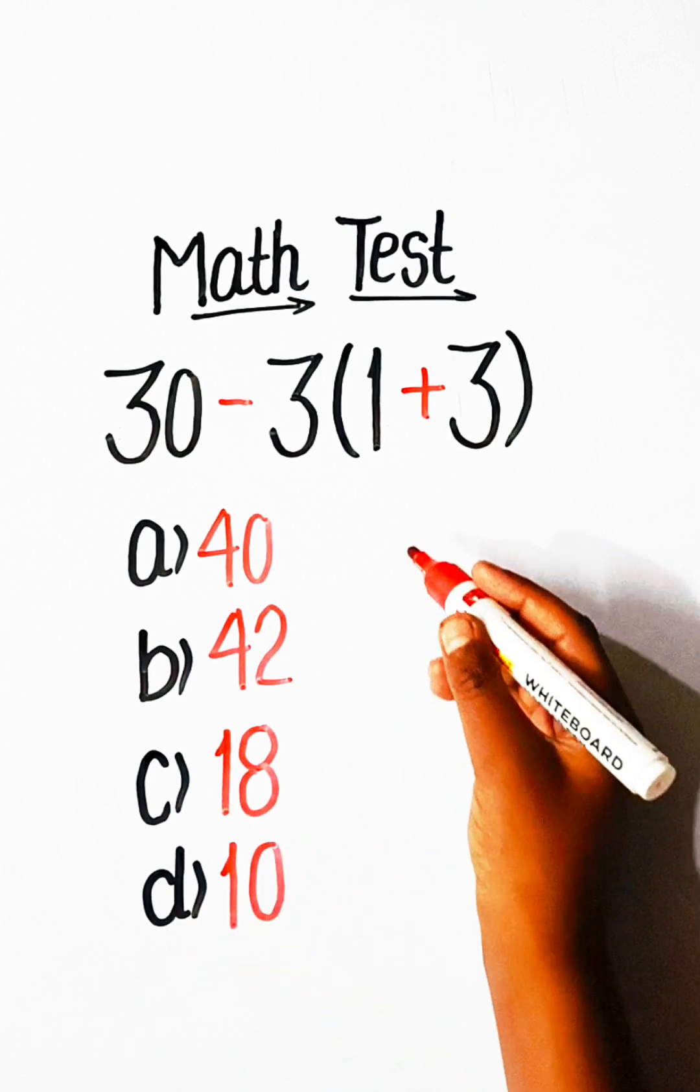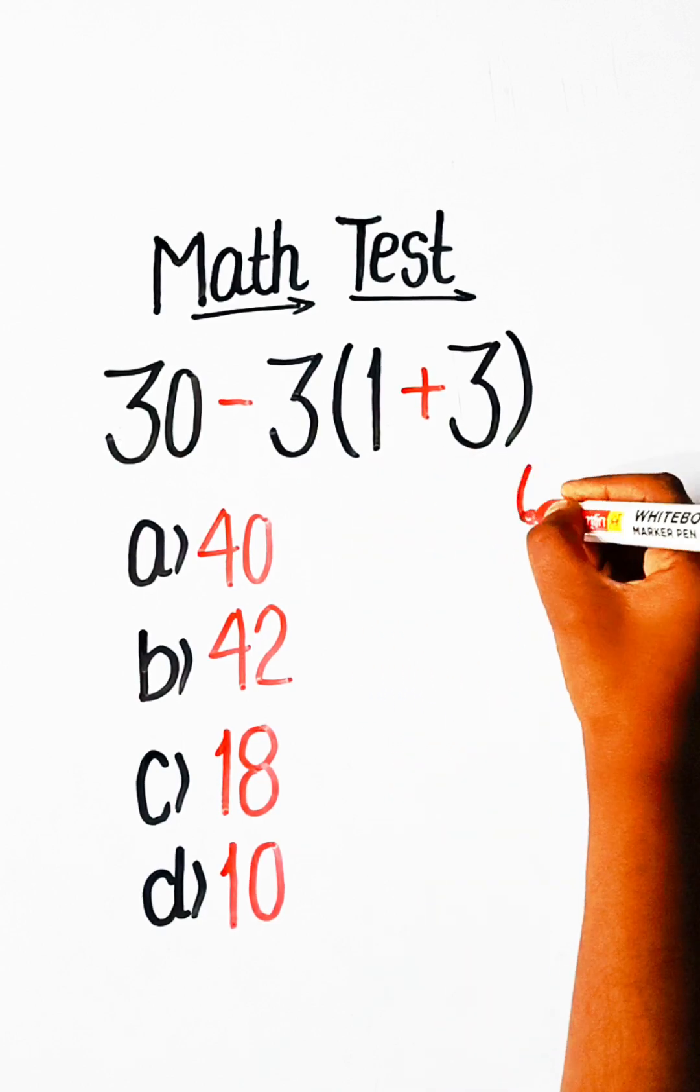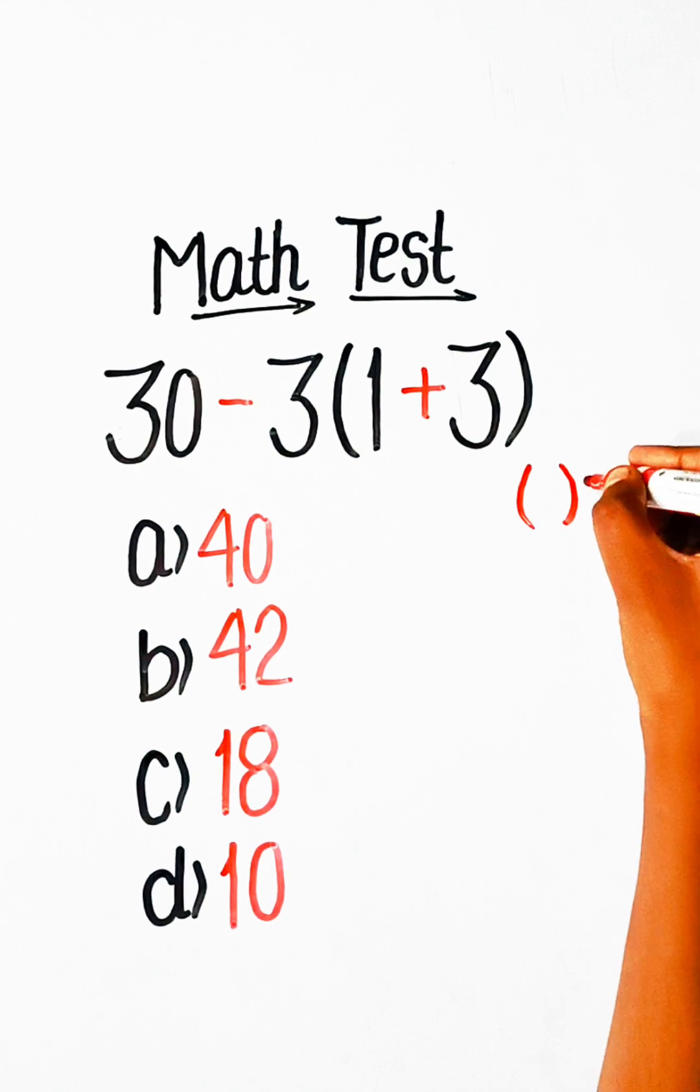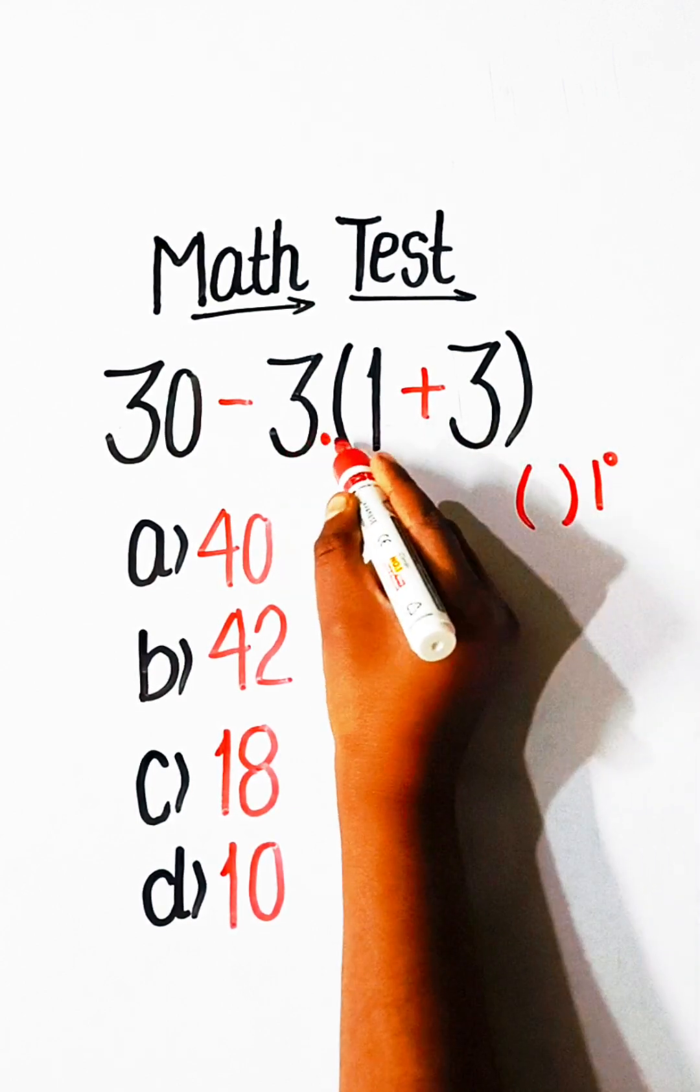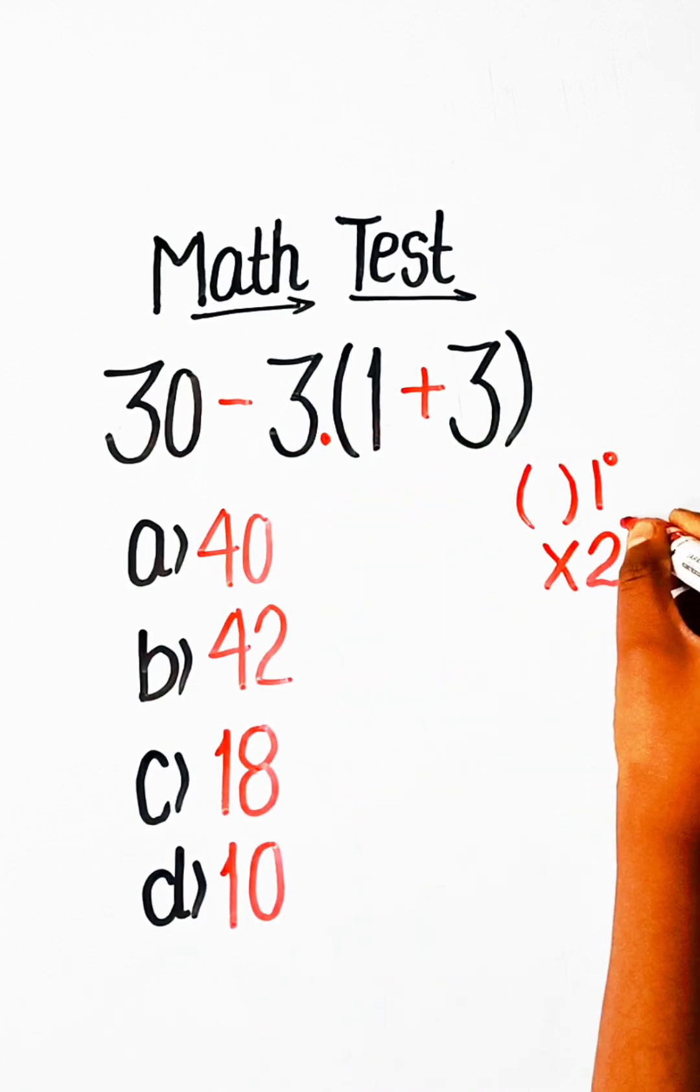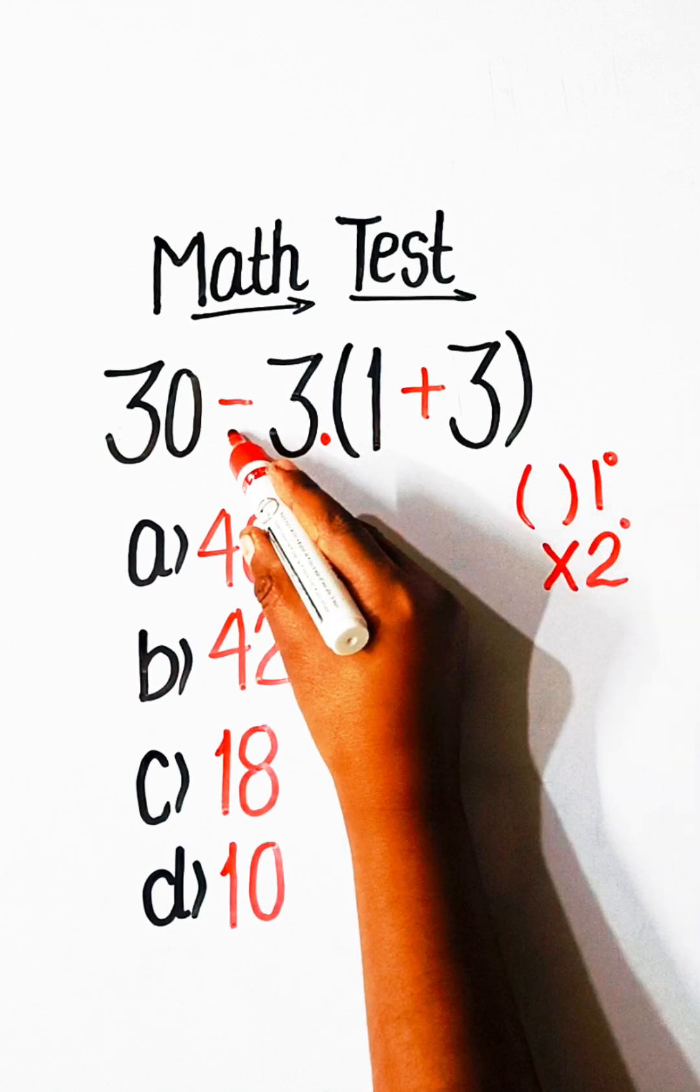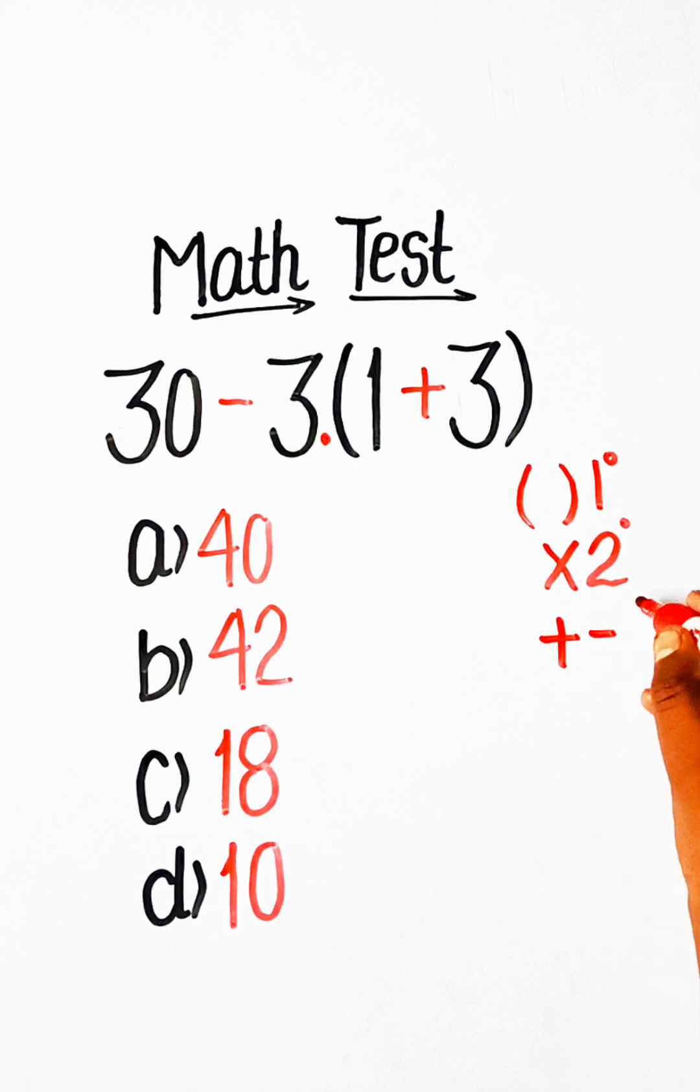So here we have brackets. We put brackets in first priority, and second we have multiplication. Third priority is plus and minus. So let's solve this.